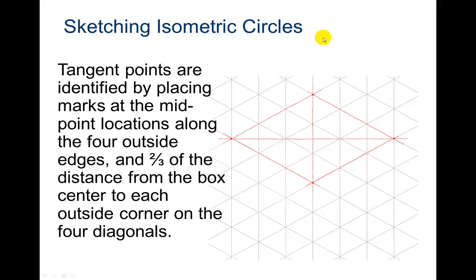Tangent points are identified by placing marks at the middle point locations along the four outside edges and two-thirds of the distance from the box center to each outside corner on the four diagonals. That's really confusing the way that they say that, when all they're doing is just saying this particular cylinder's diameter is three by three. So we know that it's going to be one, two, three across, right? One, two, three across this way, right? It's a diameter.